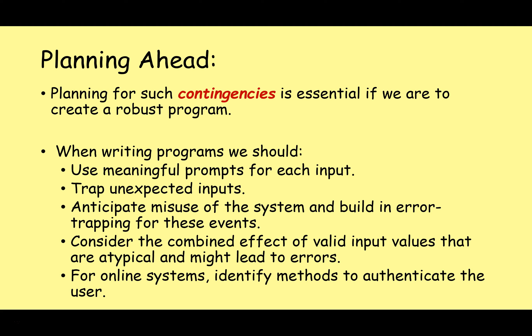Some of the things we can do when writing a program to help ensure things work smoothly: use meaningful prompts for each input to make sure the user knows what they should be typing in; trap any unexpected inputs; anticipate misuse of the system and build in error trapping for these events; and consider the combined effects of different valid input values that may lead to errors later in the program — the user might enter correct data, but when that data is put together during processing you may end up with an error like a division by zero. For online systems, be very careful to authenticate the user correctly.